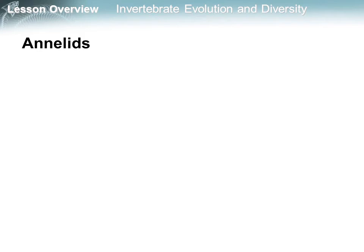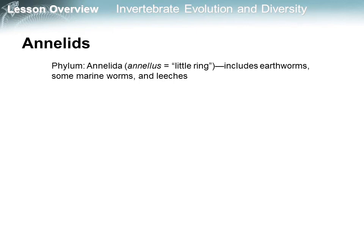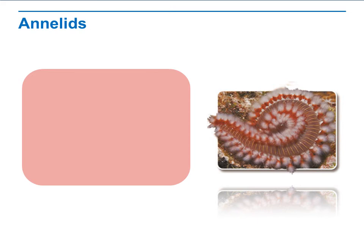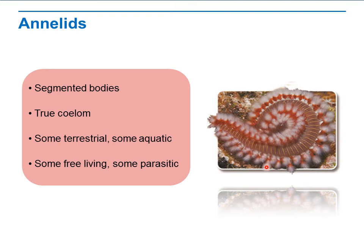Let's see annelids. They belong to phylum Annelida — annelida means little ring. This group includes earthworms, some marine worms, and leeches. Annelids are worms with segmented bodies and a true coelom lined with tissue derived from mesoderm. The annelids have segmented bodies and a true coelom. Some are terrestrial and some are aquatic, and some are free-living while some are parasitic.